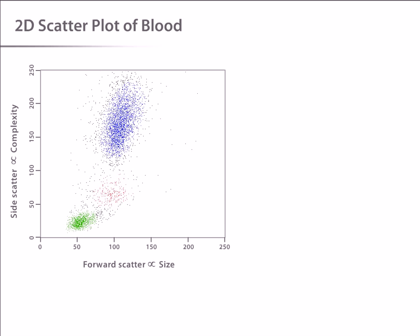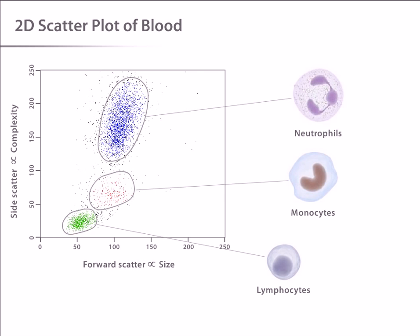The populations that emerge include lymphocytes, which are small cells possessing low internal complexity, monocytes, which are medium sized cells with slightly more internal complexity, and neutrophils and other granulocytes, which are large cells that have a lot of internal complexity. This multiparametric analysis is the real power of flow cytometry.